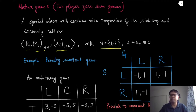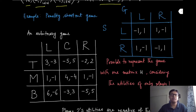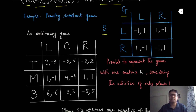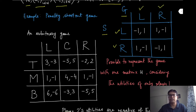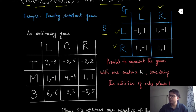As an example, I have modified the previous penalty shootout game by removing one strategy for both players. The first player is the shooter and the second player is the goalkeeper. They now have only two strategies: shoot on the left or shoot on the right, and for the goalkeeper, dive on the left or dive on the right. The utilities remain the same, and for every strategy profile — L,L or L,R — if you take the utility sum of these two players, they will always be equal to zero.